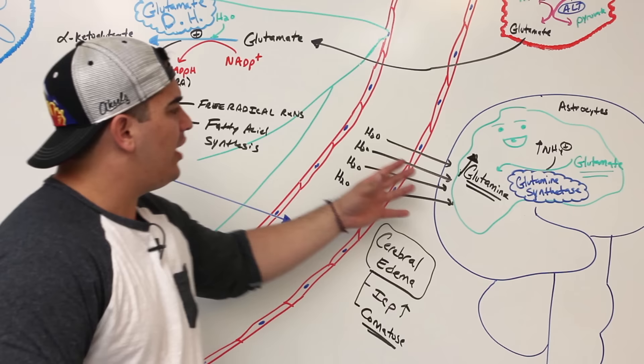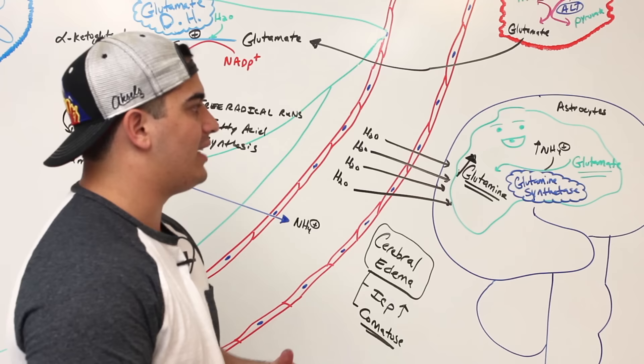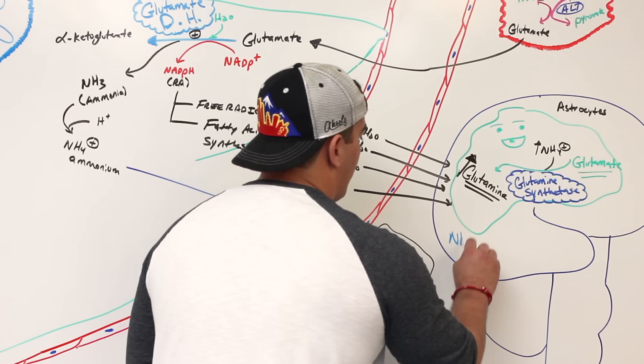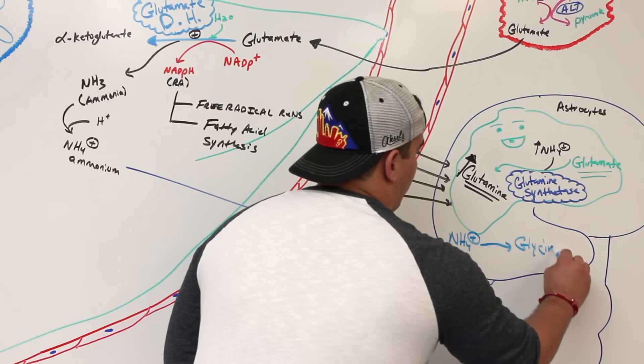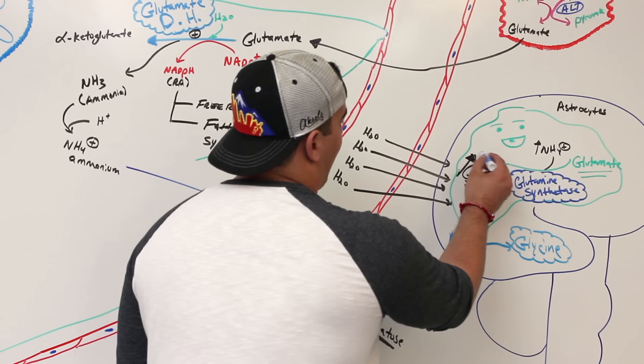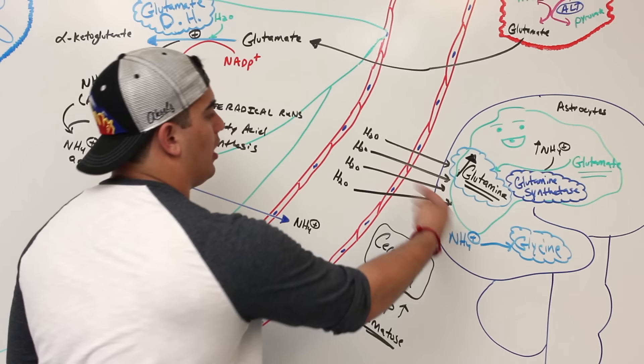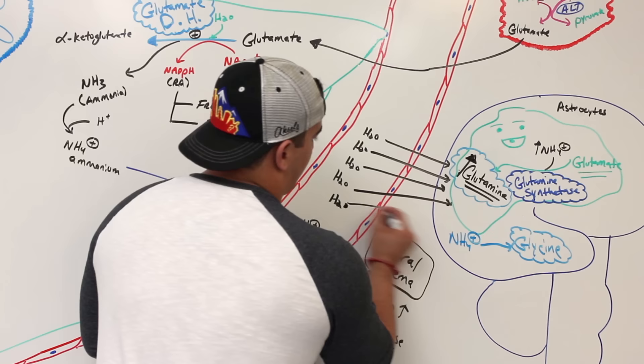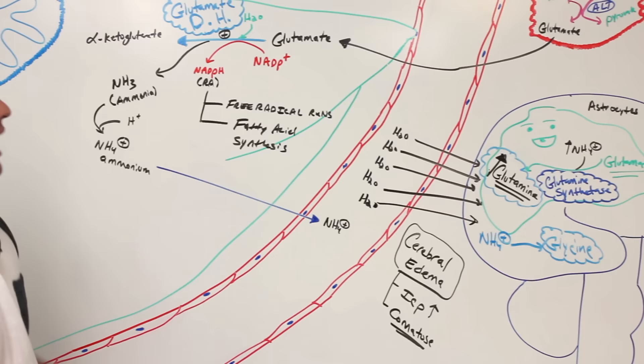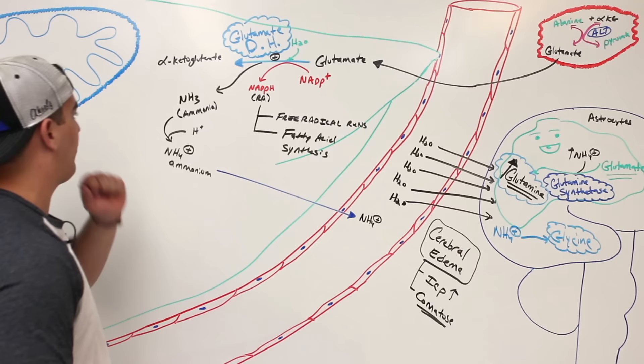Not only that, the ammonium can also combine with another molecule to form glycine. We can have a lot of glycine or a lot of glutamine because of excessive ammonium, and these two molecules can pull water into the brain or other tissue cells, causing extremely disastrous neurotoxic damage to neurons. So how do we deal with that and prevent it from happening?